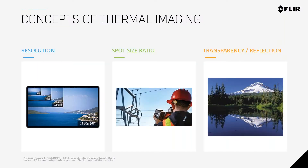A few important concepts we'll go over today. First is resolution — similar to TVs going from 720 to 1080 to 4K, the more pixels you have, the more resolution and the better your picture. Second is spot size ratio — how your picture differs depending on the strength of your camera or how far you are from your target. Third is transparency and reflection — some people think thermal cameras can see through walls or objects, but they can only see surface temperature. We'll go through each of these in more depth.